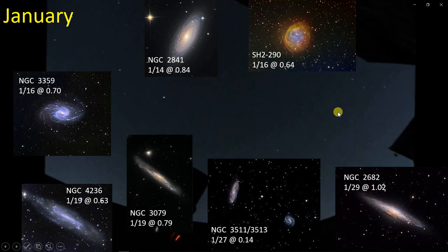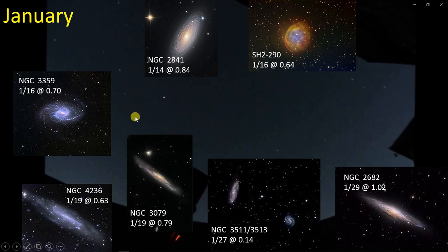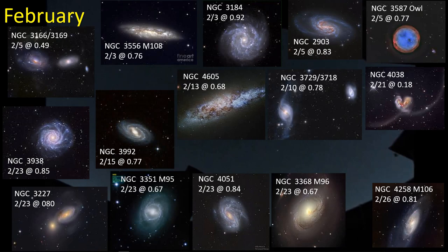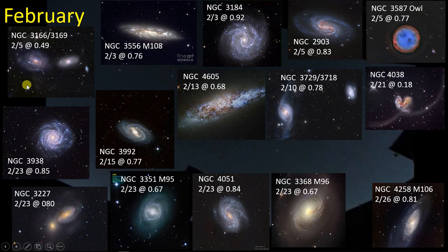In January there were only a handful of targets worthy of taking a picture of — one nebula object, an interesting dual galaxy pair I thought was kind of cool and hadn't been aware of before, and NGC 3359, which has a lot of nice structure. Some decent targets but not a whole lot going on in January. In February we start to pick up with a large number of galaxies — we're well into galaxy season now. The Owl Nebula is the one nebula available in February, but some really cool interacting galaxies such as NGC 4038.